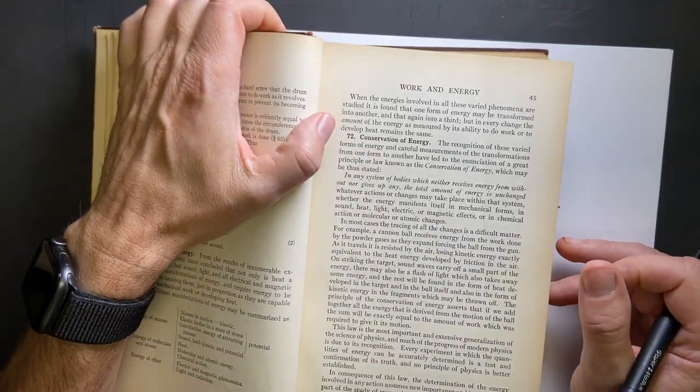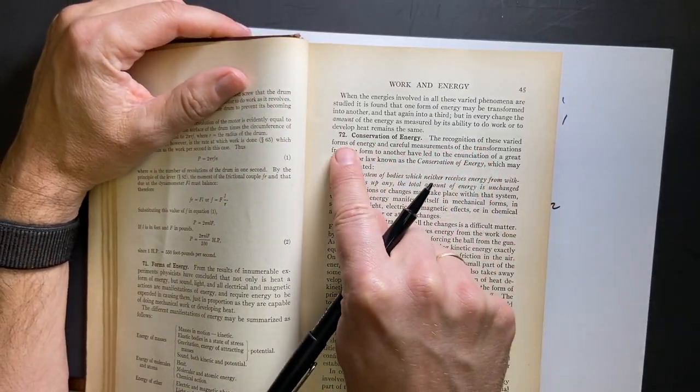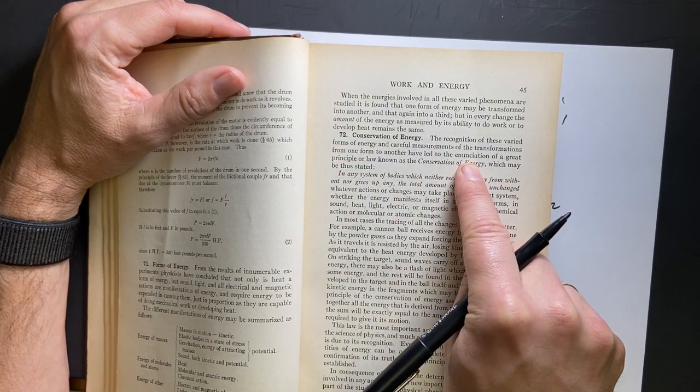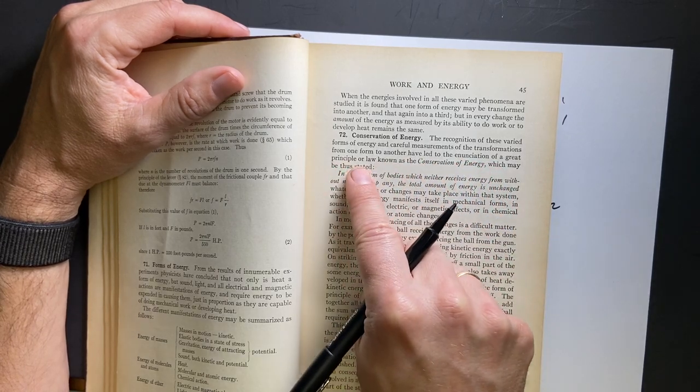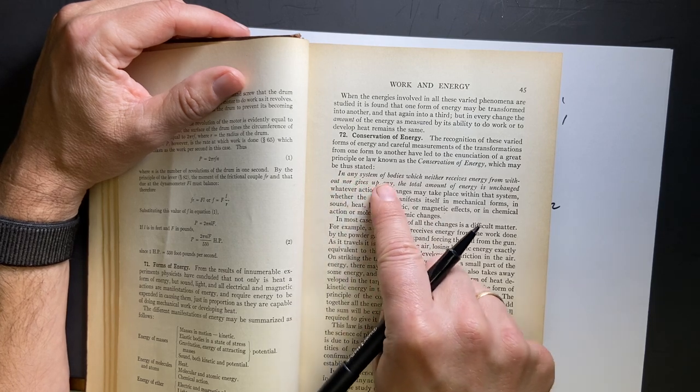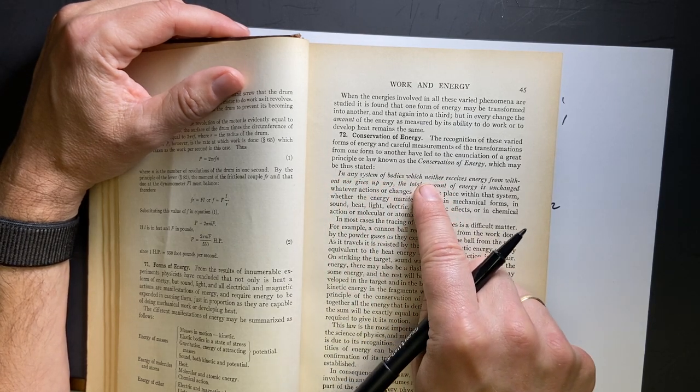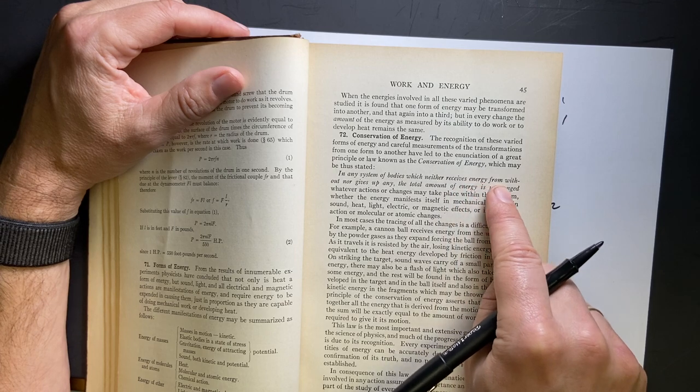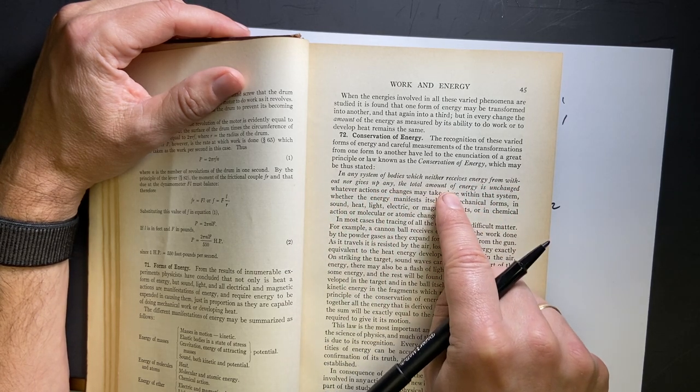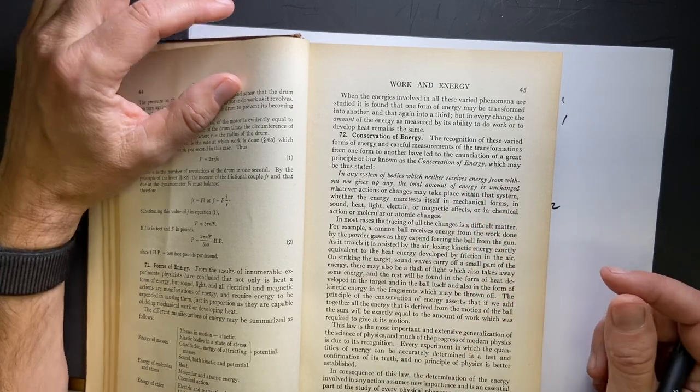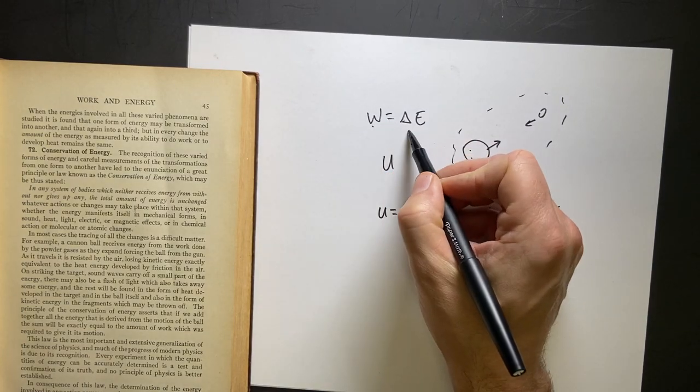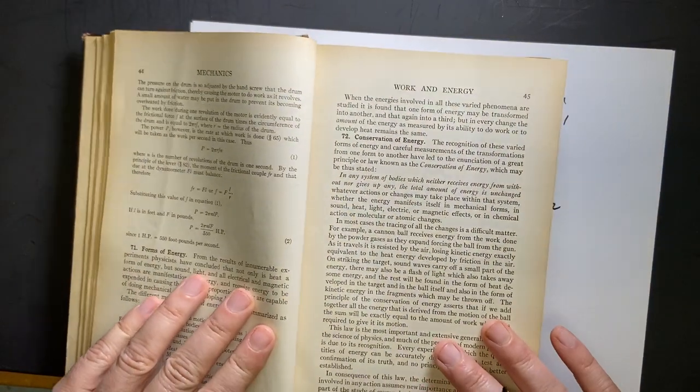Conservation of energy. Now we're getting to some good stuff. Varied forms of energy. Careful measurements of the transformation from one to the other have led to the enunciation of great principle or law known as conservation of energy. This is in italics, so I have to read it. In any system of bodies which neither receives energy from without, nor gives up any, the total amount of energy is unchanged. That's good. That just says if the work is zero, delta E is zero. So they did talk about change there.